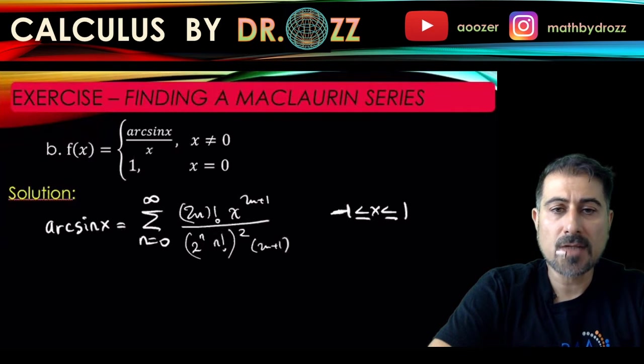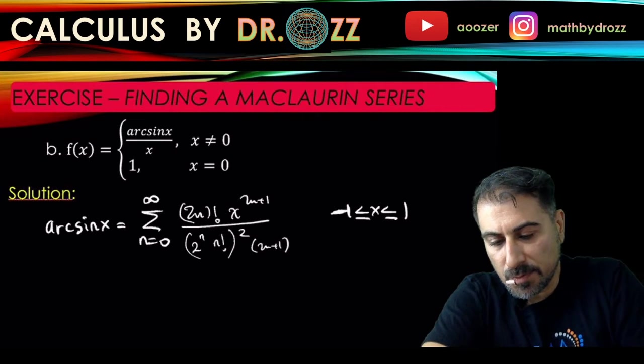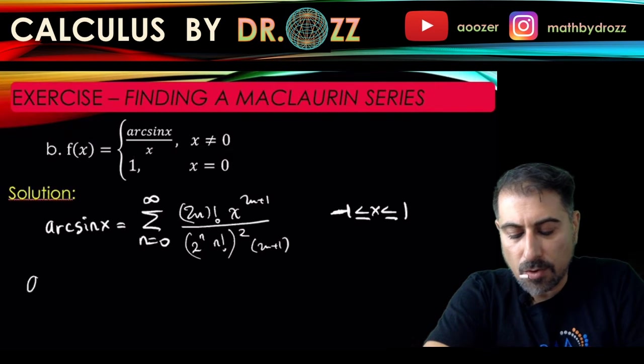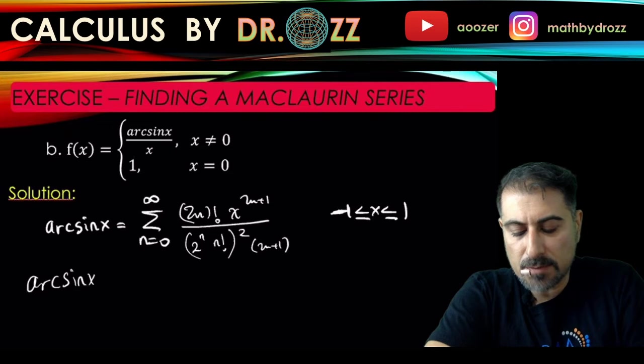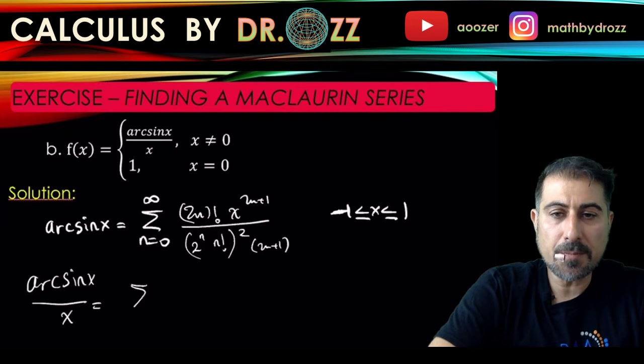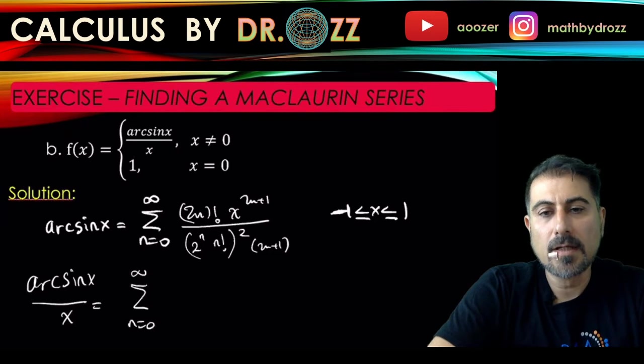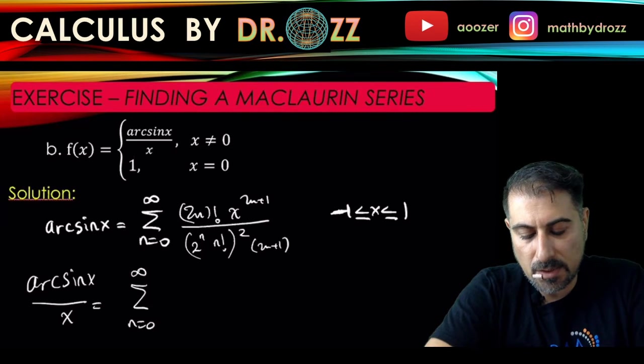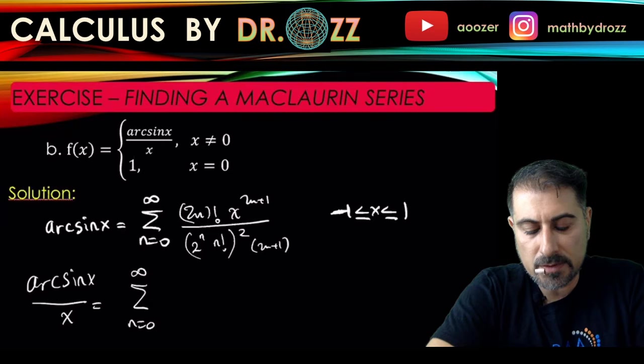All I'm going to do now is look at the power series representation of arc sine x over x. This is me dividing every single term in the power series by x. In other words, I'm just dividing x to the 2n plus 1 by x and keeping all others as is.